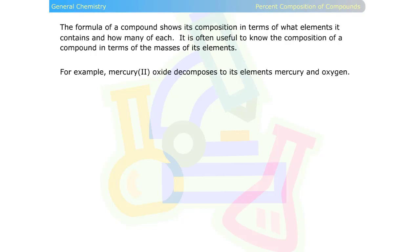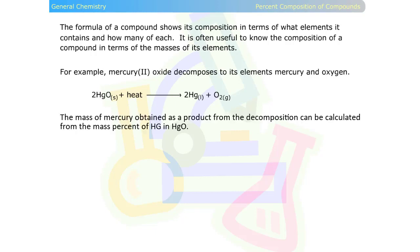mercury oxide decomposes to its elements mercury and oxygen. The mass of mercury obtained as a product from the decomposition can be calculated from the mass percent of mercury in mercury oxide.